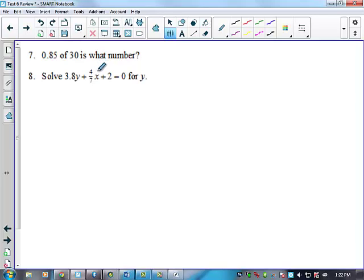Anybody have a question on 7? 8? Okay, so I'm solving for Y on 8. So, Y is right here. So, if I'm solving for Y, my goal is to what? Get Y by itself. So, I have this equal sign right here. I want Y to be by itself and everything else on the other side. So, what should I do? Subtract 2. Subtract 2 from both sides. Okay. So, if I do that, I have 3.8Y plus 4/7 X equals negative 2. Now what? Add 4/7. Subtract 4/7. Subtracted. It's being added. I've got to do the opposite. So, subtract 4/7 X.